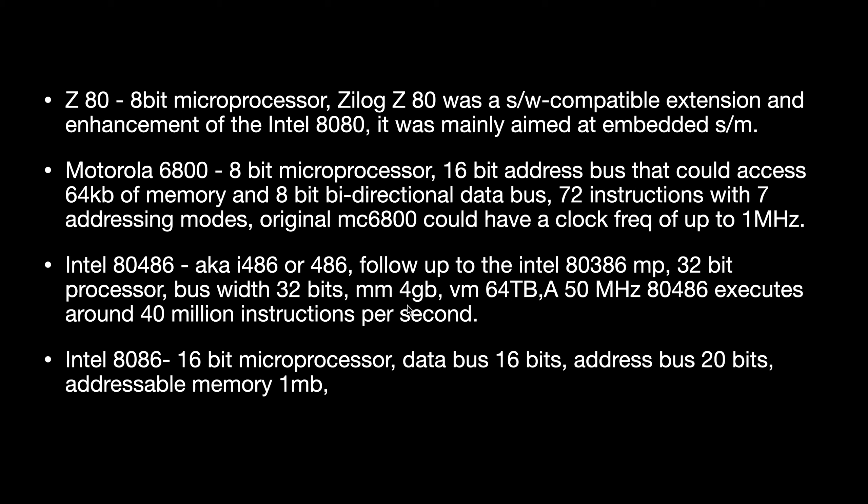Coming to our answer - Intel 8086 is a 16-bit microprocessor chip designed by Intel between early 1976 and mid-1978 when it was released. It has a 16-bit data bus and a 20-bit address bus with addressable memory of 1 MB. The memory is divided into odd and even banks, accessed concurrently to read 16 bits of data in one clock cycle. The 8086 gave rise to the x86 architecture, which eventually became Intel's most successful line of processors.